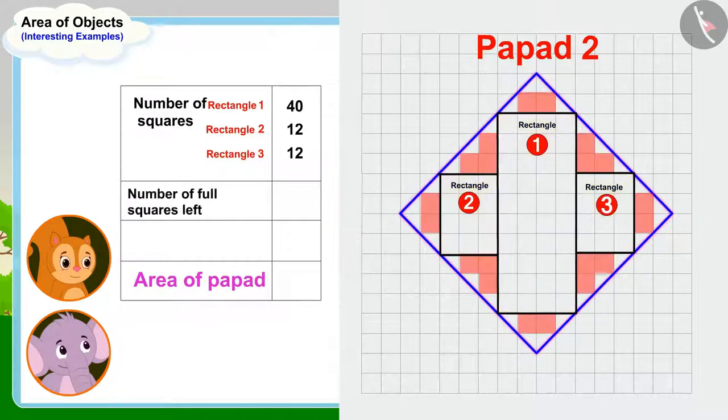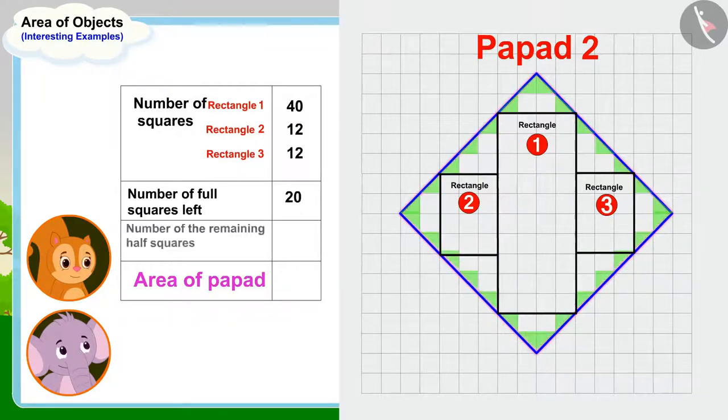Now, Chanda wrote the number of the remaining full squares, 20. And then she wrote the number of the remaining half squares, 28 or 14 full squares. In the end, Chanda used addition in this way and wrote down the total number of squares covered by this papar, 98.